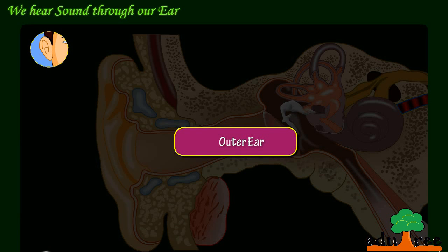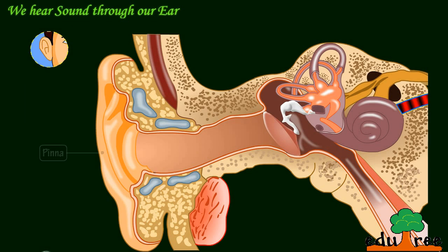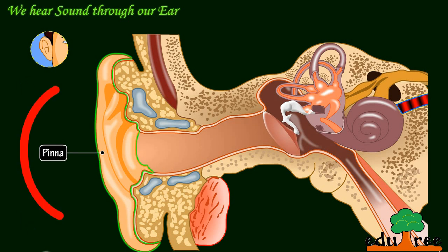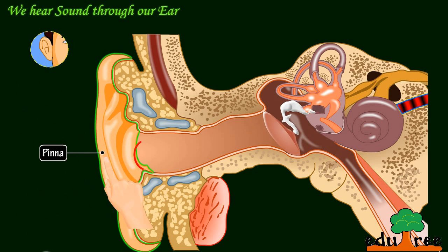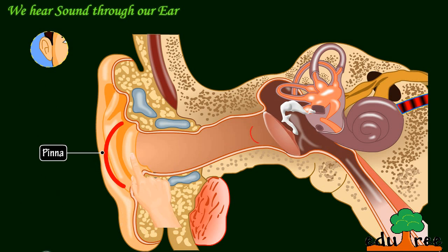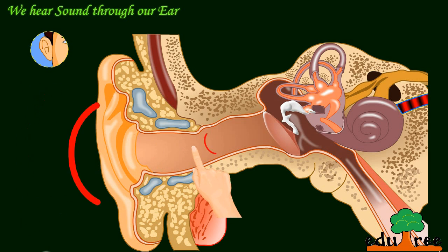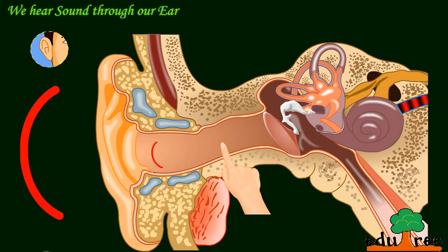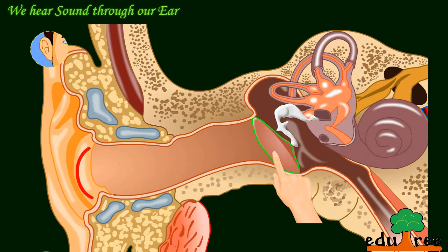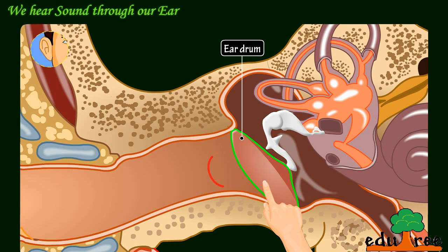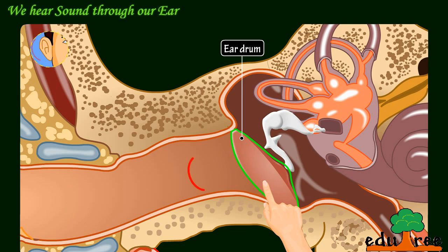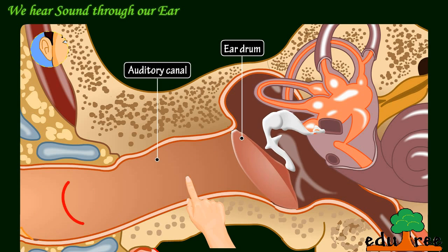Let's learn about the outer ear. The outer portion of our ear is called the pinna. Its main function is to collect sounds from your surroundings. The sounds then pass through the auditory canal and reach your eardrum. Here you can see the sound waves entering the ear. Your eardrum is a thin membrane which is present at the end of the auditory canal.